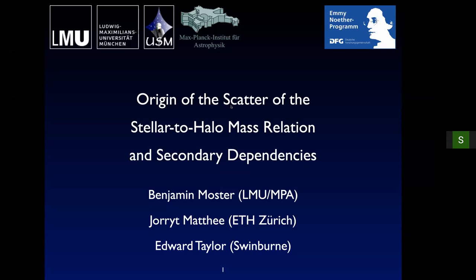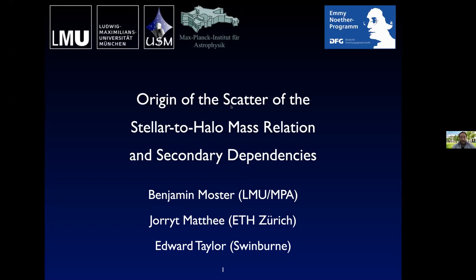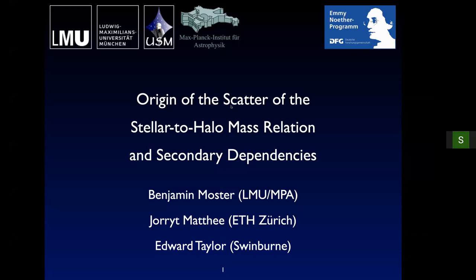We were asked to talk about the origin of the scatter in the stellar-to-halo mass relation and also the secondary dependencies other than halo mass. This is a topic that's sometimes overlooked. Usually people talk about the average stellar-to-halo mass relation, but there is scatter in the relation. I will give a rough overview from the empirical modeling side, then hand over for insight into hydrodynamical simulations.